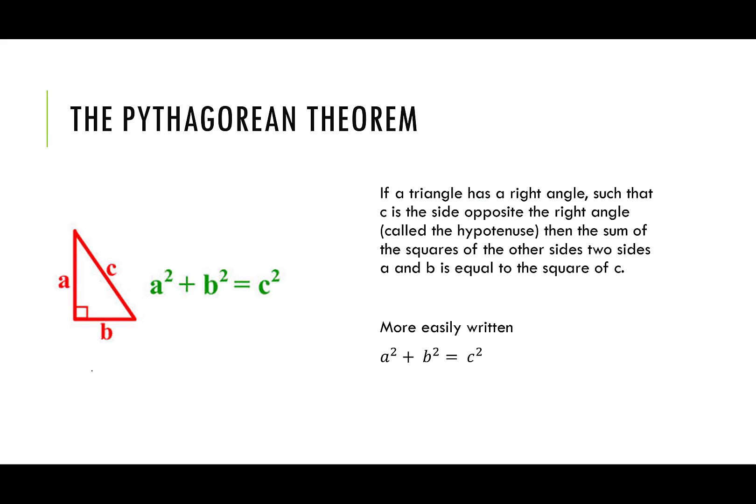If a triangle has a right angle such that C, the opposite side of the right angle, called the hypotenuse, then the sum of the squares of the other two sides, A and B, is equal to the square of C. Let's say that more easily.